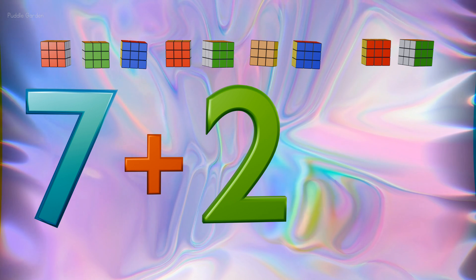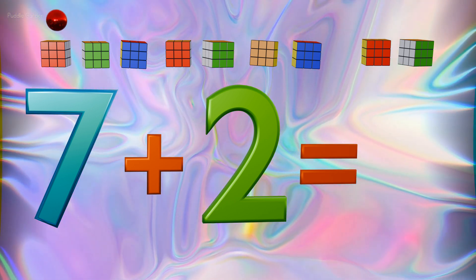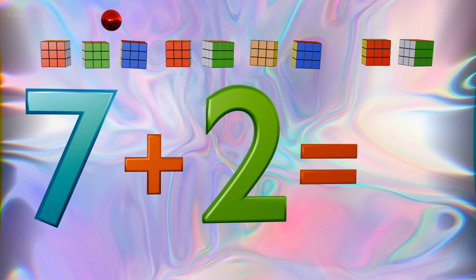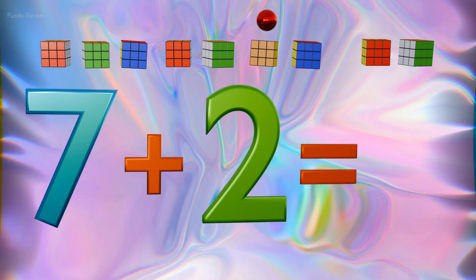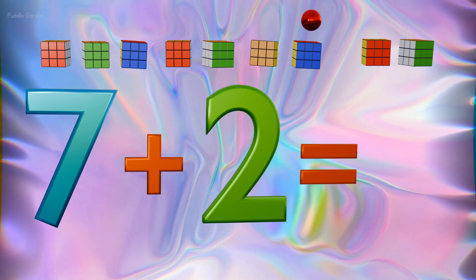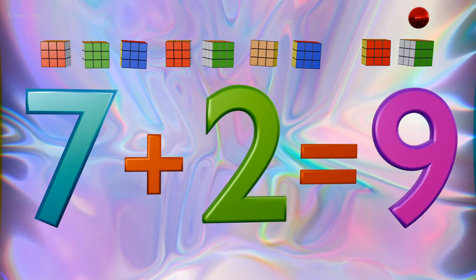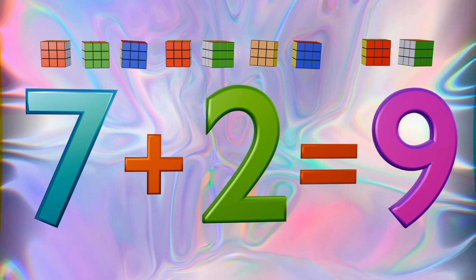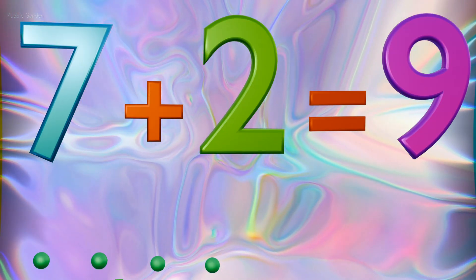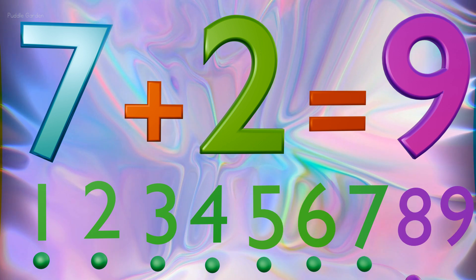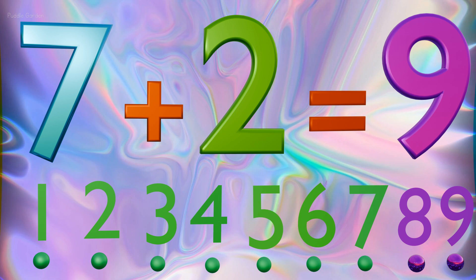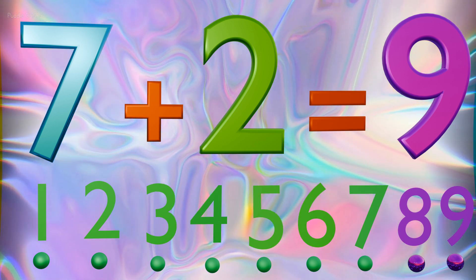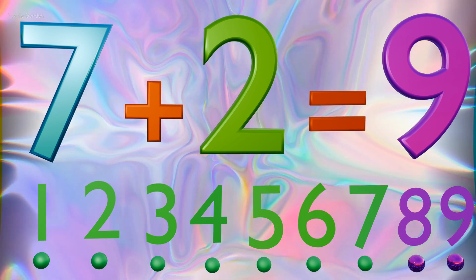7 plus 2 more equals 1, 2, 3, 4, 5, 6, 7, 8, 9. 7 plus 2 equals 9. Or if we start off with 7 and we count on 2, we land on 9. So 7, 8, 9. So 7 plus 2 more equals 9.